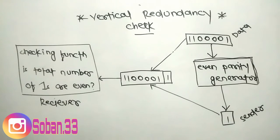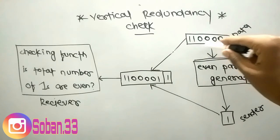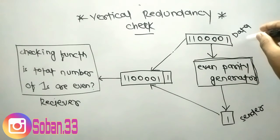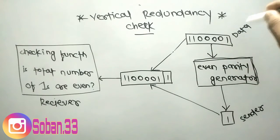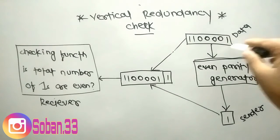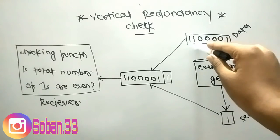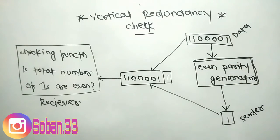Suppose we want to transmit the binary data unit 1100001. Adding together the number of ones gives us three — one, two, three — an odd number.